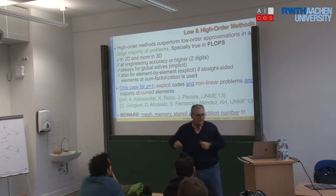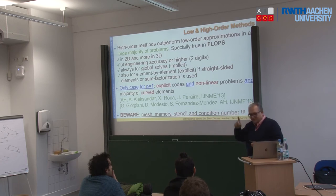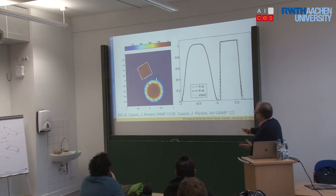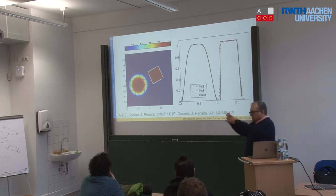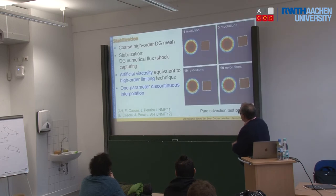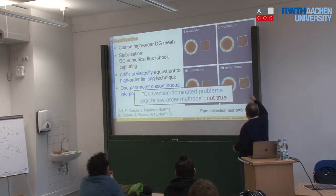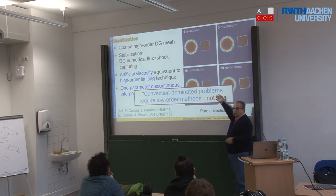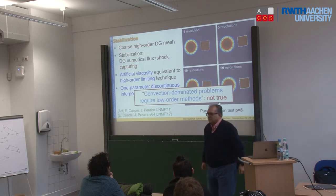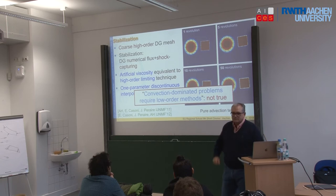Some old results — but I love to present them because this is pure convection: a Gaussian and a square, which equals one here and zero on the other side, after 50 revolutions, and you can see that things work pretty well. When I was writing the book on finite elements, everybody was telling me that only low order elements were good for convection problems — and it's not true. You can also have high order elements if you do things properly.